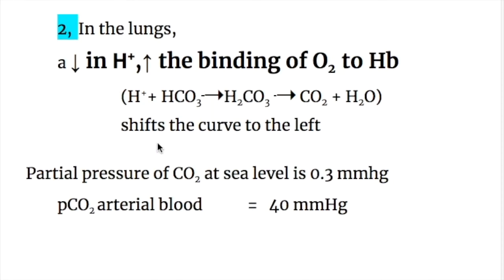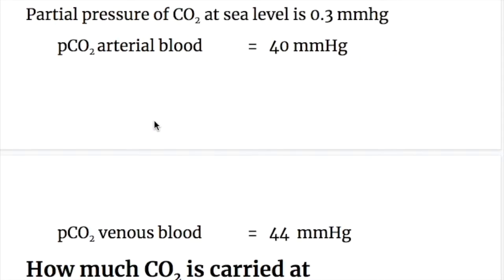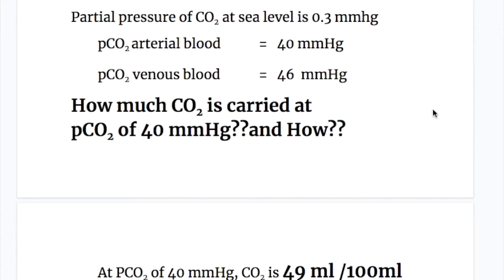This shifts the curve to the left. Regarding partial pressures: PCO2 at sea level is 0.3 mmHg; the partial pressure of carbon dioxide in arterial blood is 40 mmHg, and in venous blood is 46 mmHg.